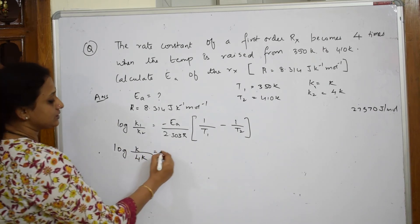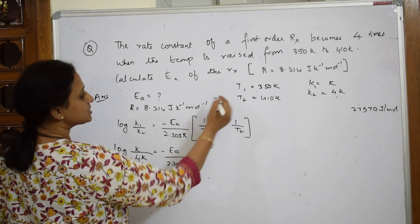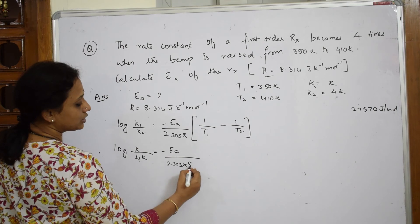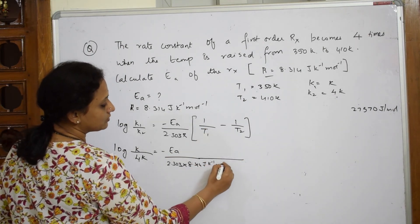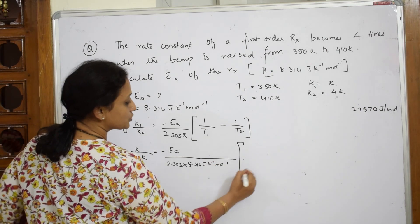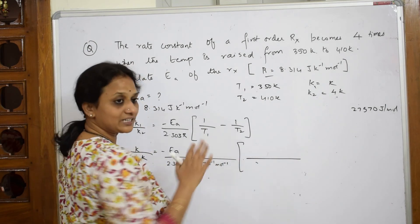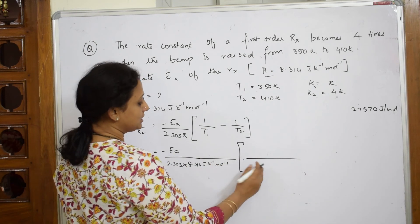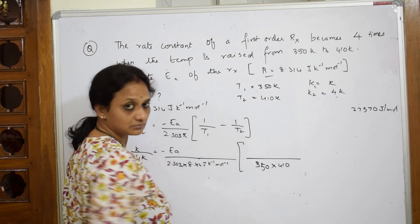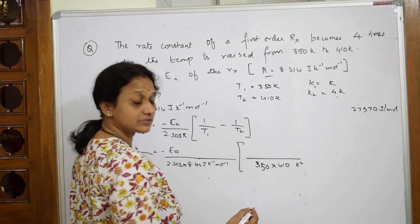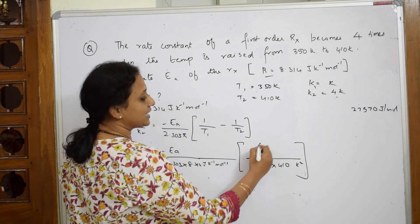Substituting: log K by 4K — since it becomes four times — is equal to minus Ea by 2.303 into 8.314 J K inverse mol inverse. For the temperatures, taking LCM gives 350 into 410, and subtracting 410 minus 350 gives 60 in the numerator.